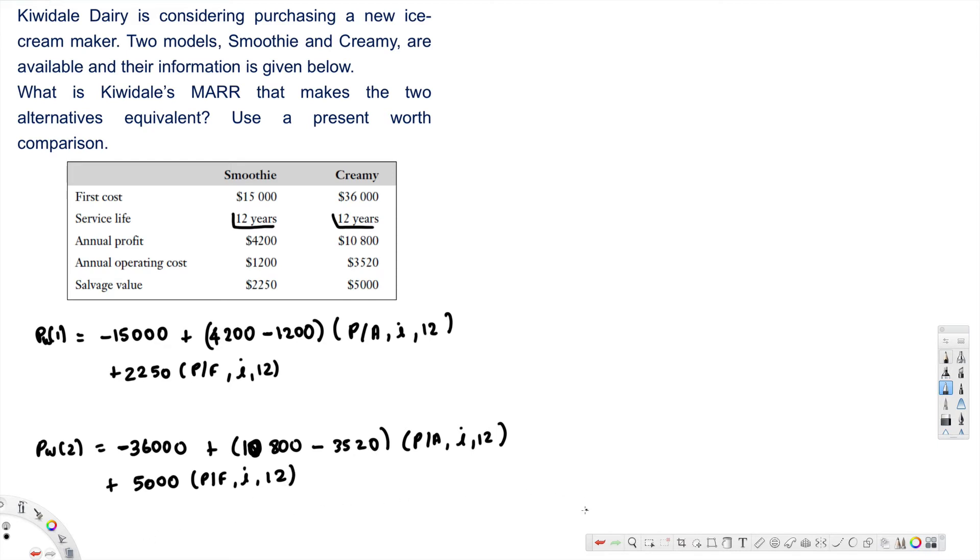Okay, now let's go ahead and equalize both of them. PW1 is equal to PW2. If we do that, this becomes: negative $15,000 plus $4,200 minus $1,200, times P/A, i, 12, plus $2,250 times P/F, i, 12. All of these things are...